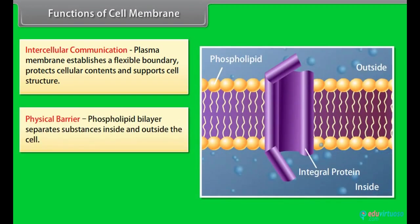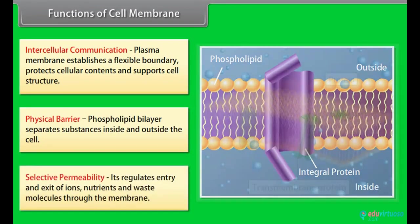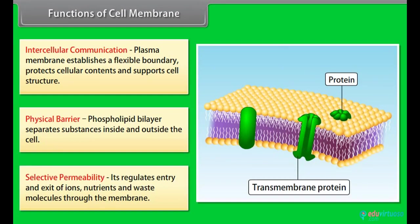Physical barrier - phospholipid bilayer separates substances inside and outside the cell. Selective permeability - it regulates entry and exit of ions, nutrients and waste molecules through the membrane.